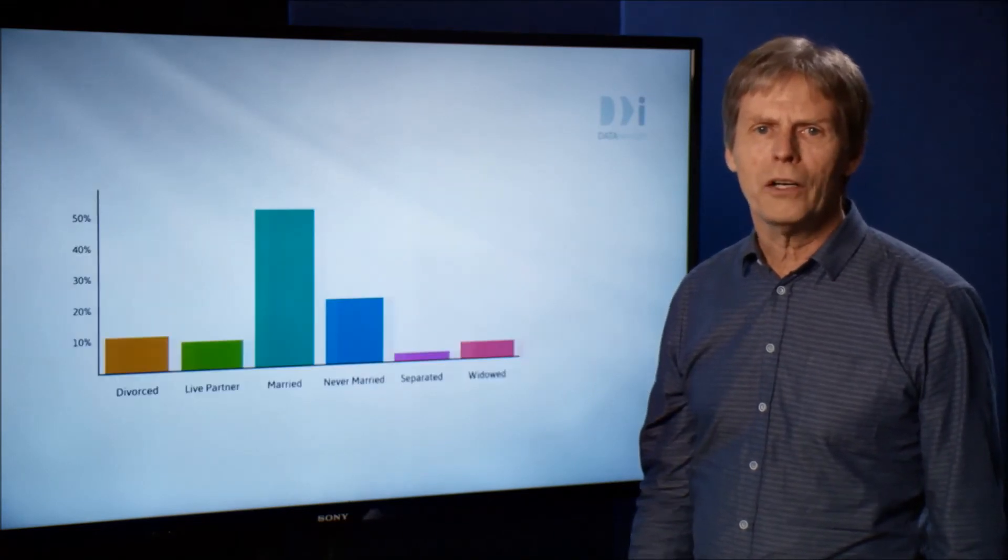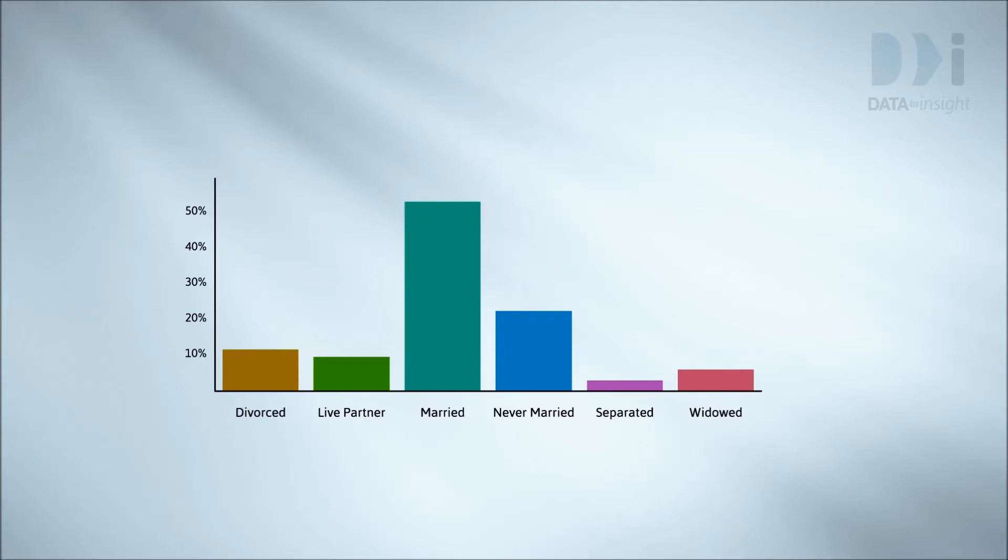Let's go back to marital status. What we see first is differing bar heights. Higher bars indicate more people. With a little more effort, we can see that the married bar is about 2.5 times as high as the never married bar.